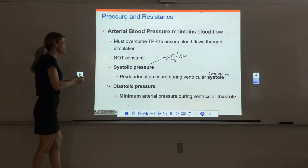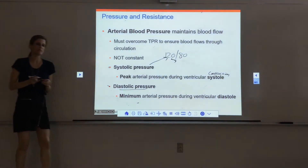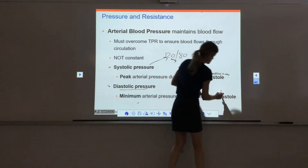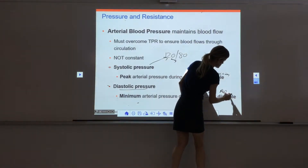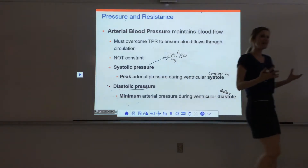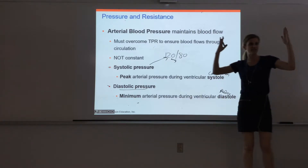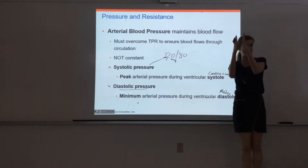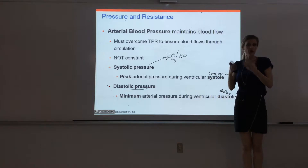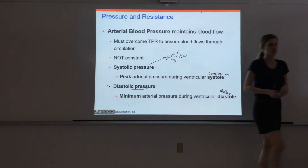The second number is the diastolic pressure — that's the minimum pressure, when the ventricles are in diastole, meaning they're relaxed. When they relax, there's still pressure because there's still blood in the vessels. The elastic arteries will kind of snap shut, which generates a little bit of extra pressure, but that's going to be a lot less than the systolic pressure.